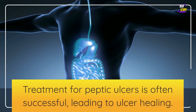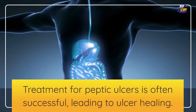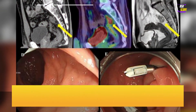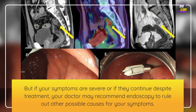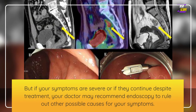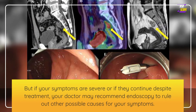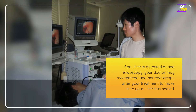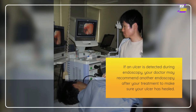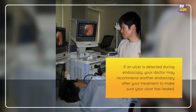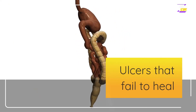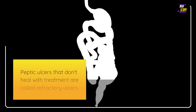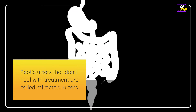Follow-up after initial treatment: treatment for peptic ulcers is often successful and leads to ulcer healing. But if your symptoms are severe or continue despite treatment, your doctor may recommend endoscopy to rule out other possible causes. If an ulcer is detected during endoscopy, your doctor may recommend another endoscopy after treatment to make sure your ulcer has healed.